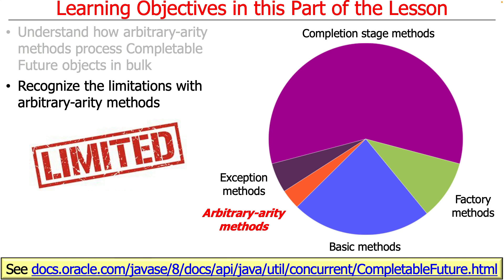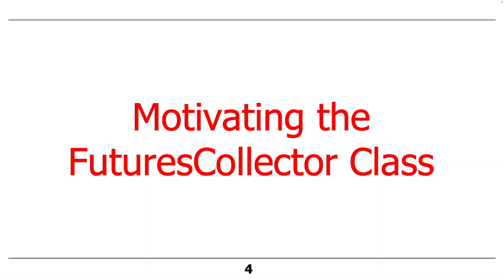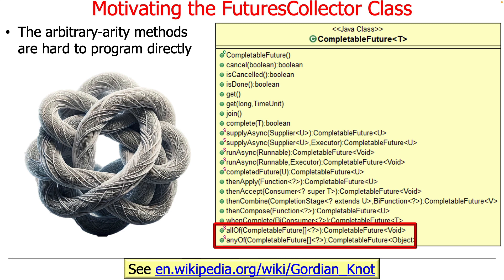First, we're going to talk about the limitations with the arbitrary arity methods and why we need to address these limitations by wrapping the allOf method within a class that will then work seamlessly with the Java streams framework. This is really a great example of turning lemons into lemonade, because working around the limitations actually ends up producing a much more powerful abstraction than trying to use the allOf method by itself. So let's motivate why we need this.